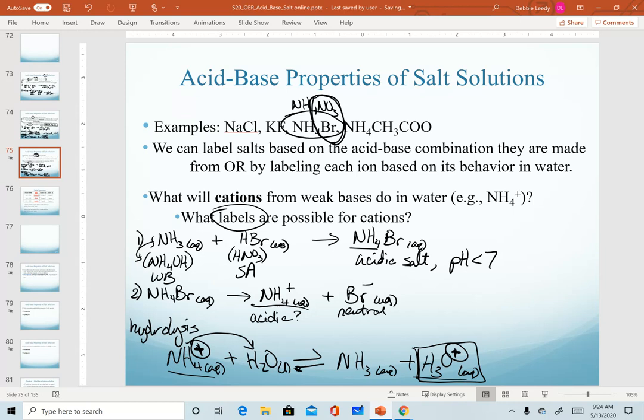Going back up to our main question at the top here, we want to know what labels are possible for cations. Cations can be neutral, there are eight cations that come from strong bases, or cations can be acidic. There are numerous of these. The main one that we'll use, by far not the only one that you should recognize, but the most common one you should recognize is the ammonium ion.